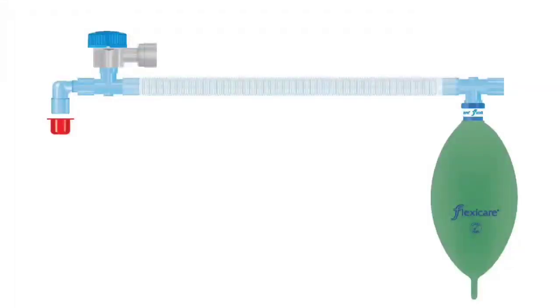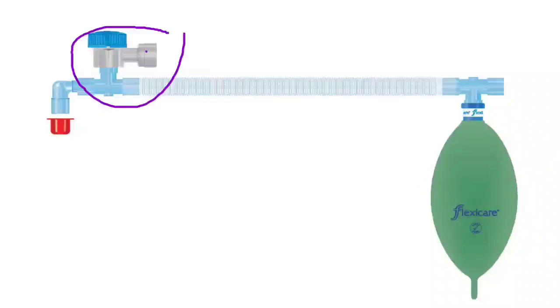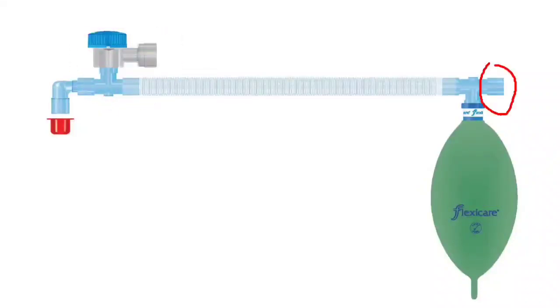This is a Mapleson A circuit. It has four main parts: the reservoir bag, which lies at the machine end; the APL valve, which is situated at the patient end; the fresh gas inlet, which also lies at the machine end; and the corrugated tube, which is usually 110 cm in length.